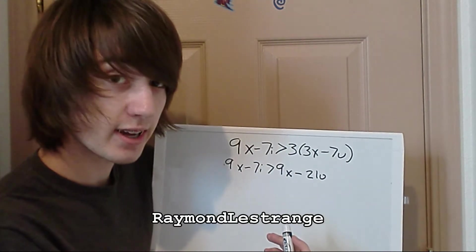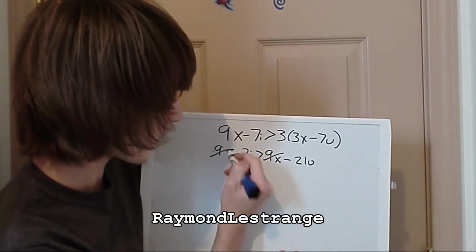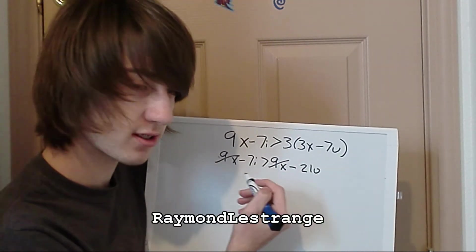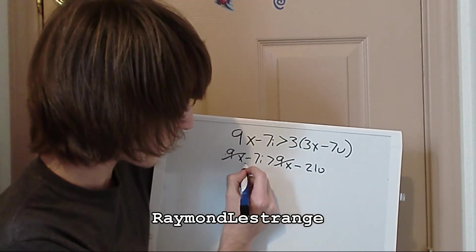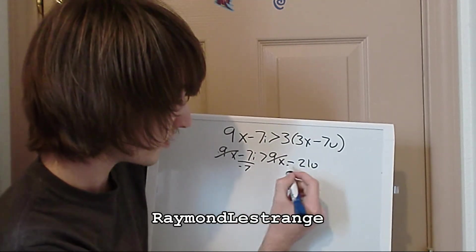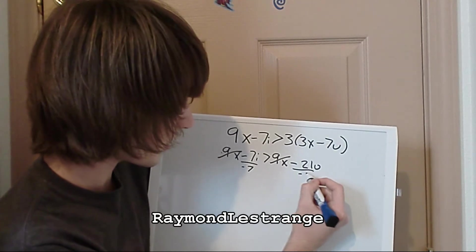So now there's a 9x here and a 9x there. So we can cancel that out because it's on both sides of the equation. Now we can also divide by negative 7 here and negative 7 here.